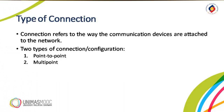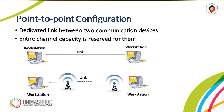Before discussing network, we actually need to define some network attributes. The type of connection refers to the way the communication devices are attached to the network. There are two types of connection or configuration: the first one is the point-to-point configuration, and the second one is the multi-point configuration. A point-to-point connection provides a dedicated link between two devices. The entire capacity of the link is reserved for transmission between those two devices. Most point-to-point configurations use an actual line of wire or cable to connect the two ends, but other options such as microwave or satellite links are also possible. For example, when you change a television channel by infrared remote control, you are actually establishing a point-to-point connection between the remote control and the television control system.